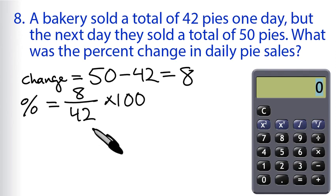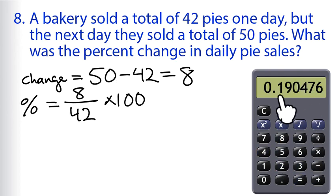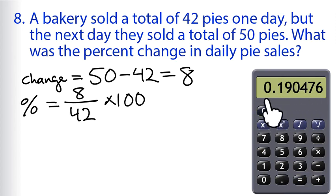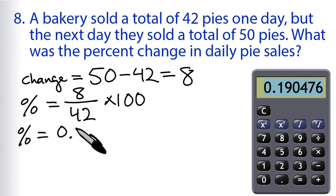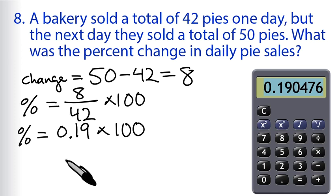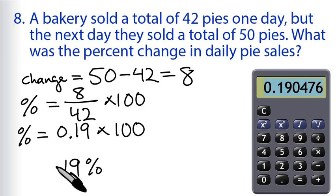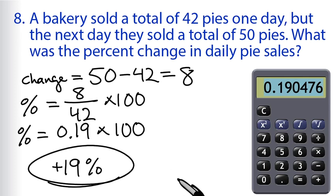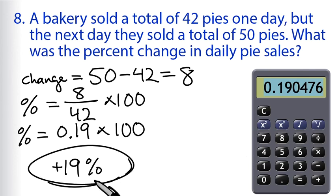We have 8 divided by 42 equals 0.190476. We'll pay attention to the first few digits — 0.19 times 100. So the percent change equals 19%. That's a nice clean 19%, positive, so we put the plus sign there. If you sell 42 pies one day and then 50 pies the next day, the percent change is positive 19%, or a 19% increase.